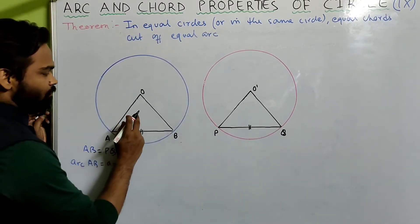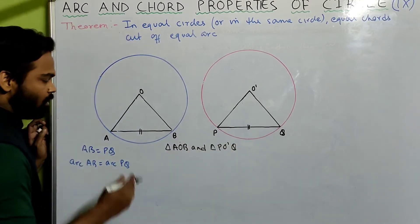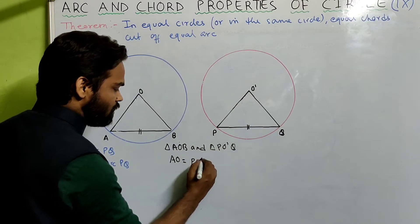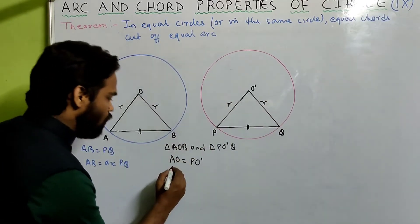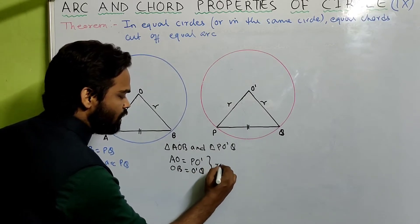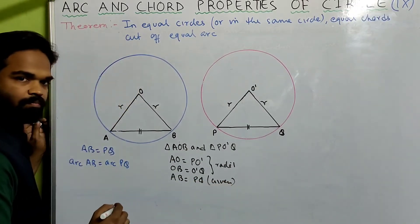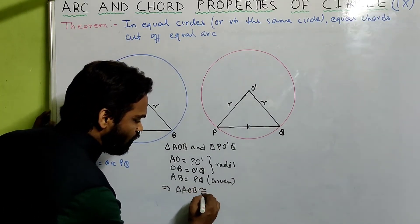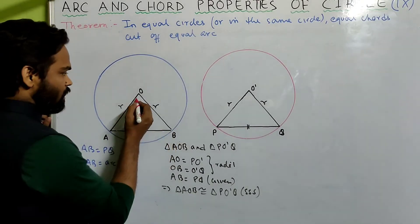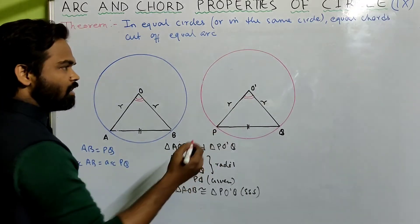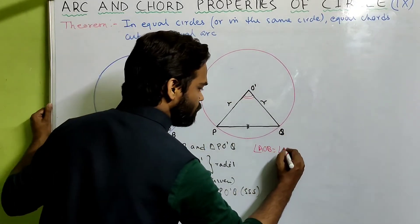Consider triangles AOB and PO'Q. AO equals PO' since the two circles are equal, meaning the radii are equal — both equal r. Similarly OB equals O'Q. AB equals PQ, as that is given — equal chords. Therefore triangle AOB is congruent to triangle PO'Q by SSS. Since these two triangles are congruent, angle AOB will be equal to angle PO'Q by CPCT.